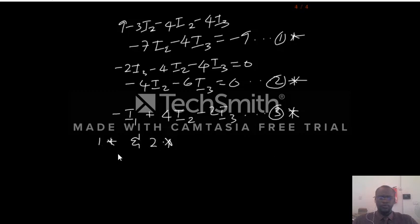So by substituting, if you look at equation 1 and 2, they have almost the same unknowns. We have I2, I2, I3, I3. So we can solve by either elimination or substitution method to get rid of either I2 or I3. So now we are going to get rid of I2 from equation 1 and 2 by elimination method.